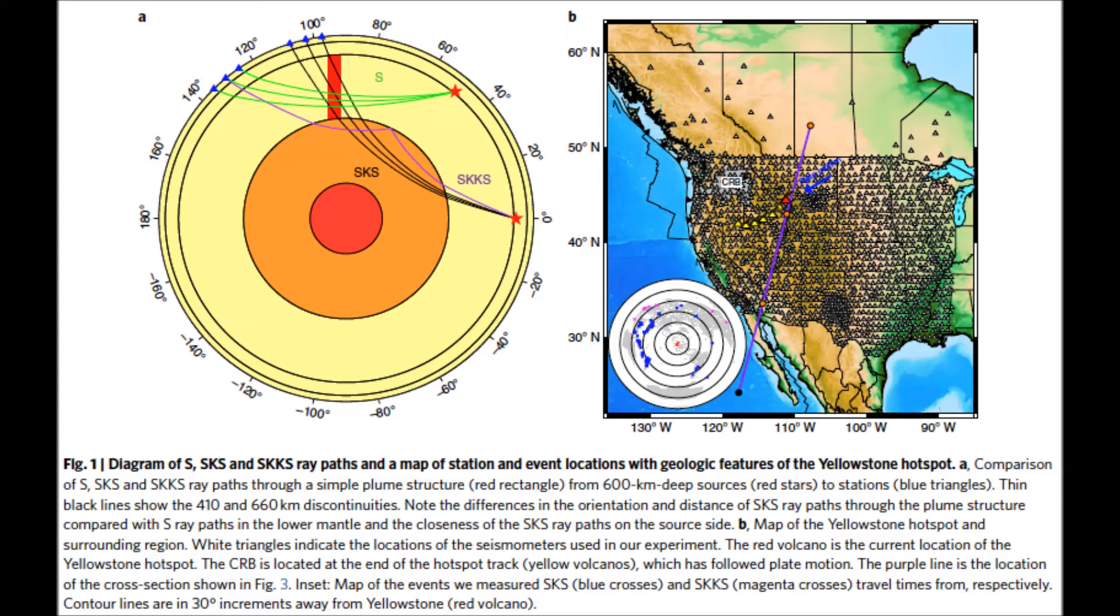Liu, alongside graduate understudies, distributed a paper not long ago in Nature contending that Yellowstone's warmth is piped from the Pacific coast, a point challenged by analysts at the University of Utah.